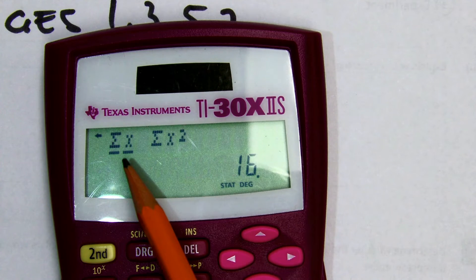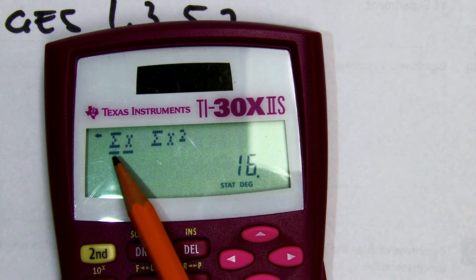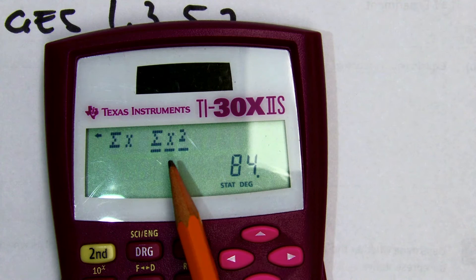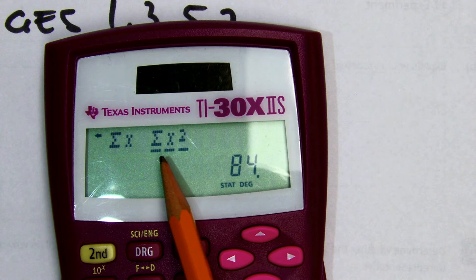And if you go one more, you have summation of your list and summation squared. That just added up all the numbers in the list.